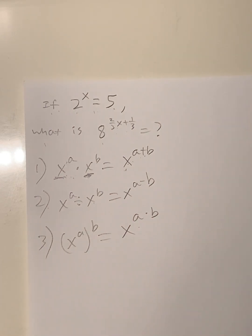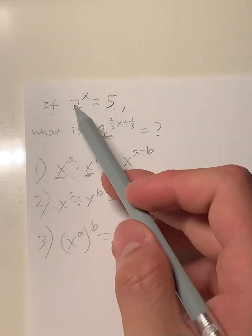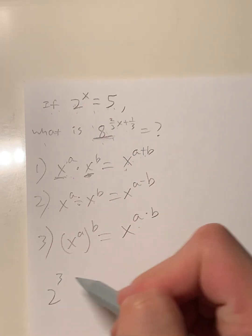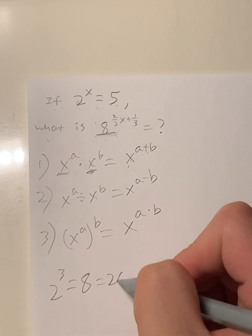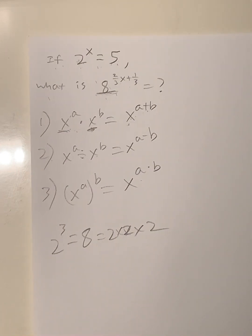So let's start solving. 2^x = 5. So we have base 8, right? What's the relationship between this and base 2? We know that 2^3 = 8. Two times two times two is equal to eight. Now, what do we do from here?